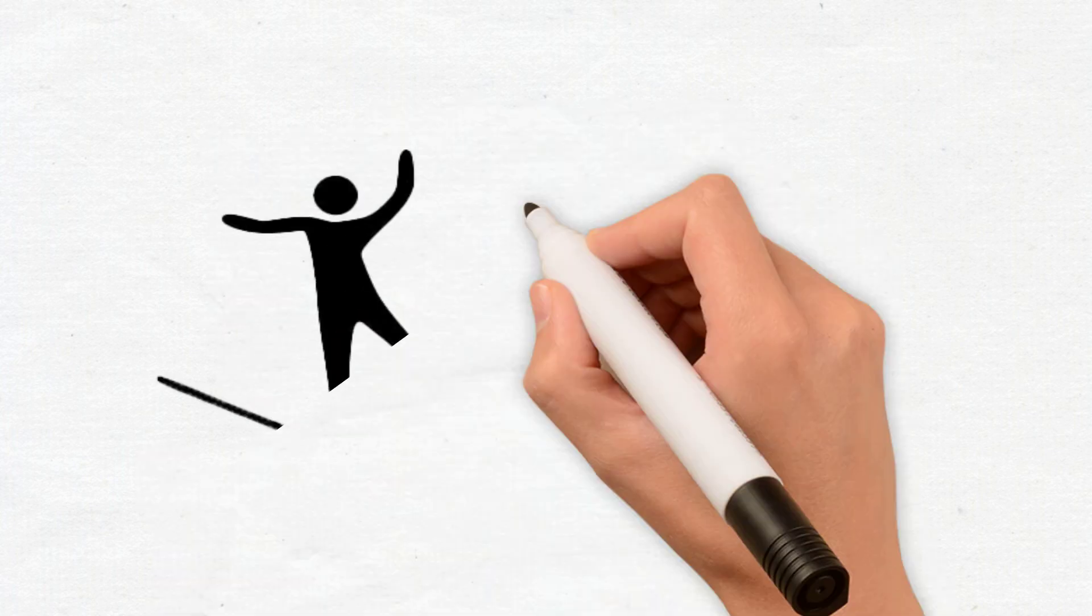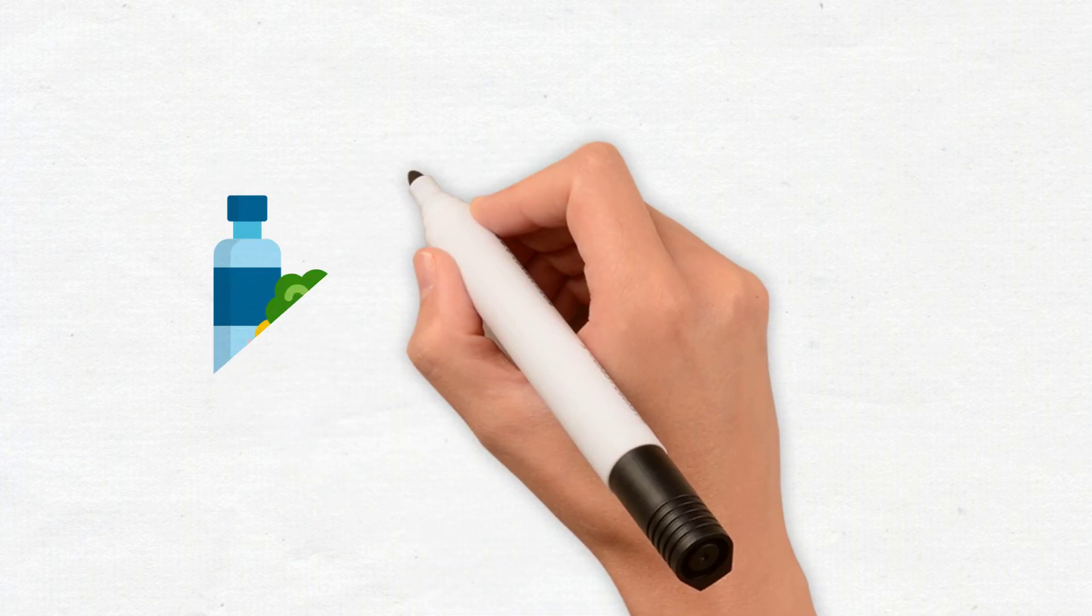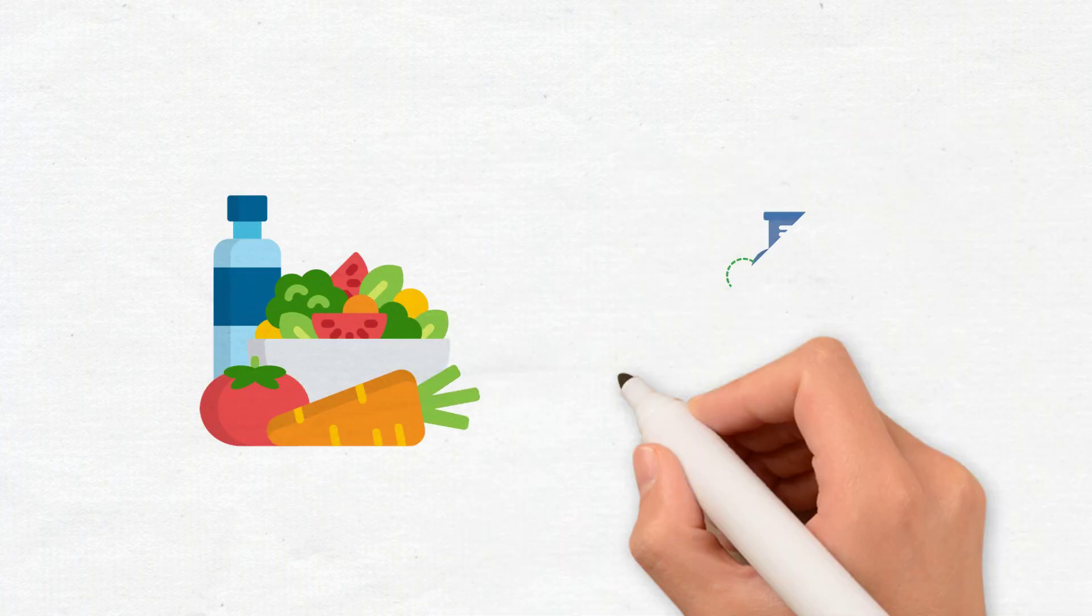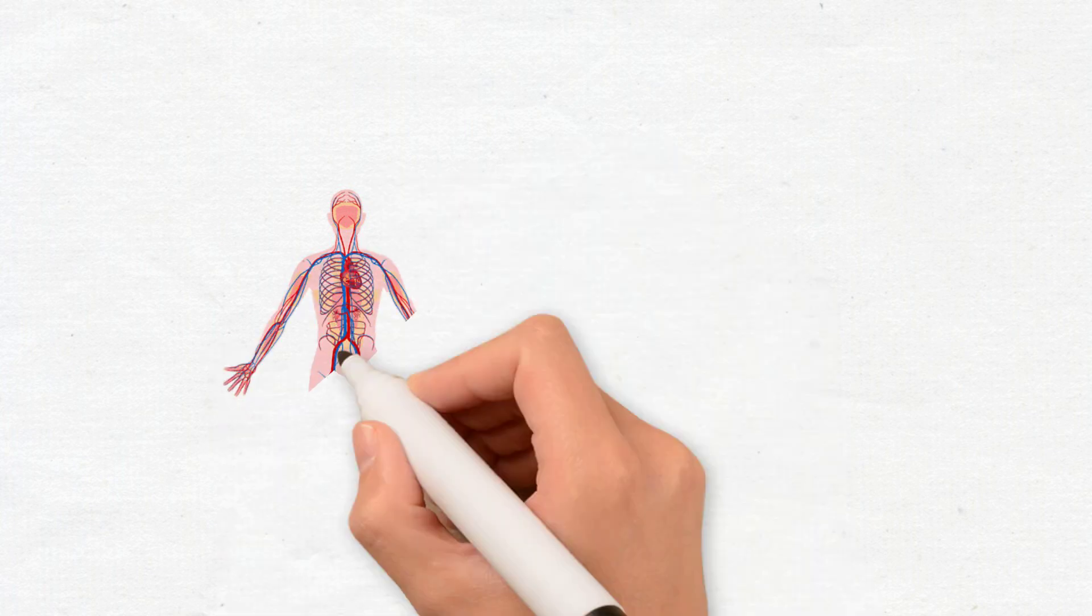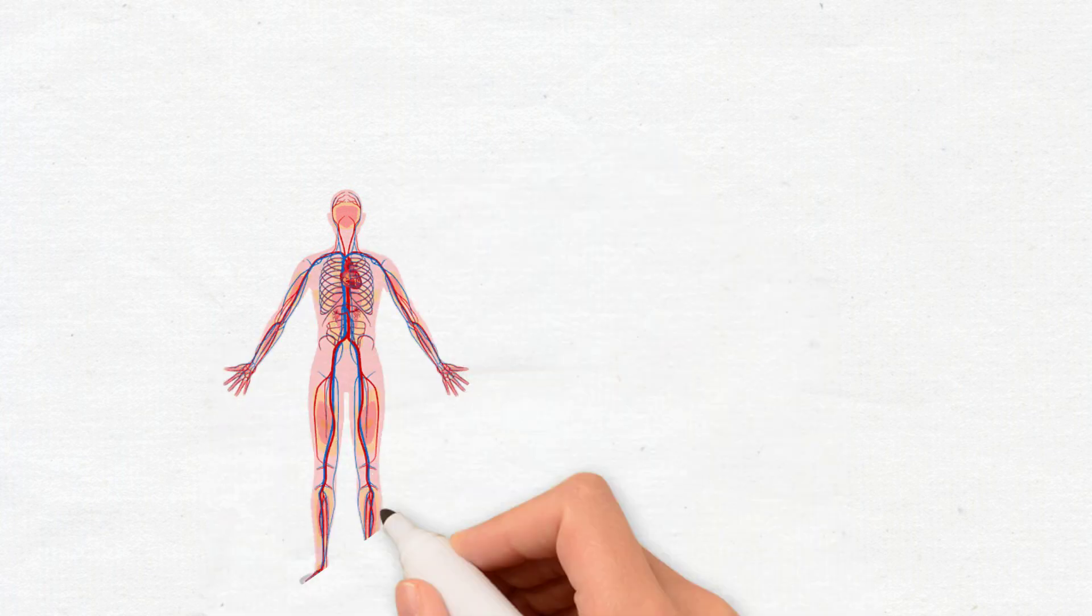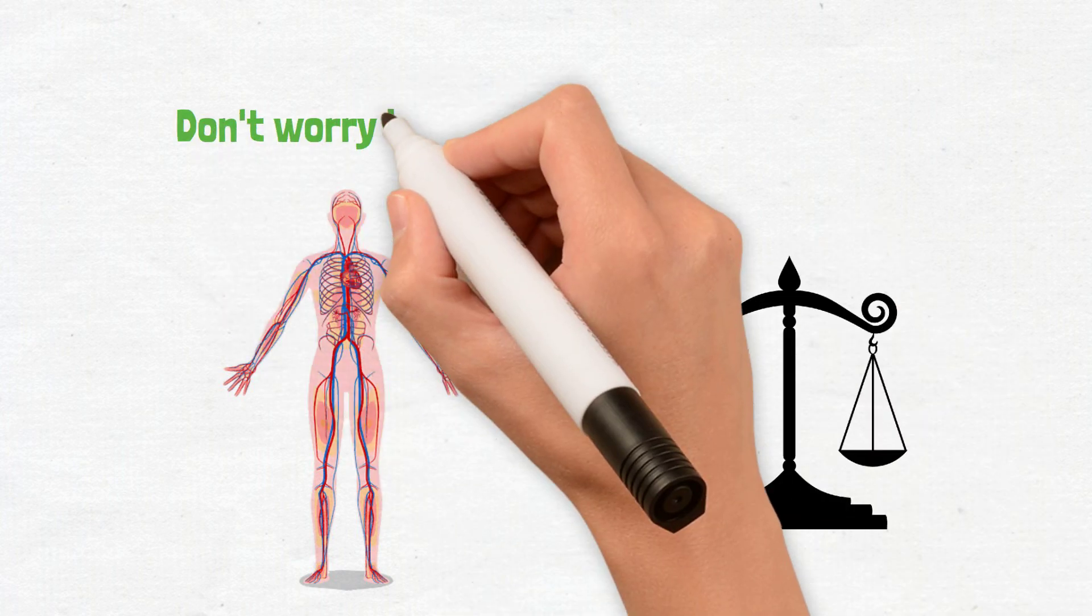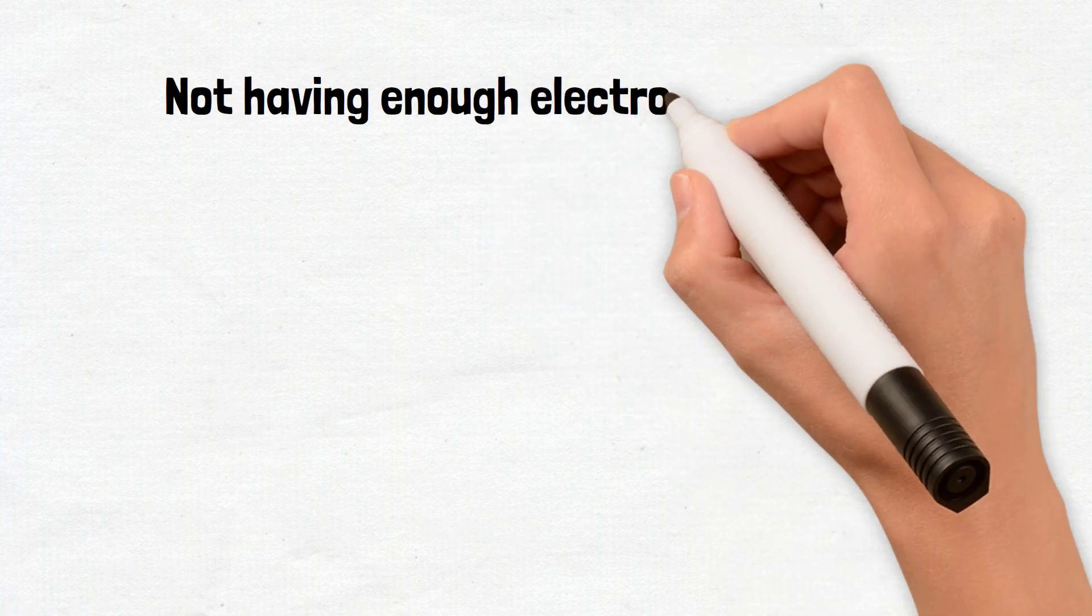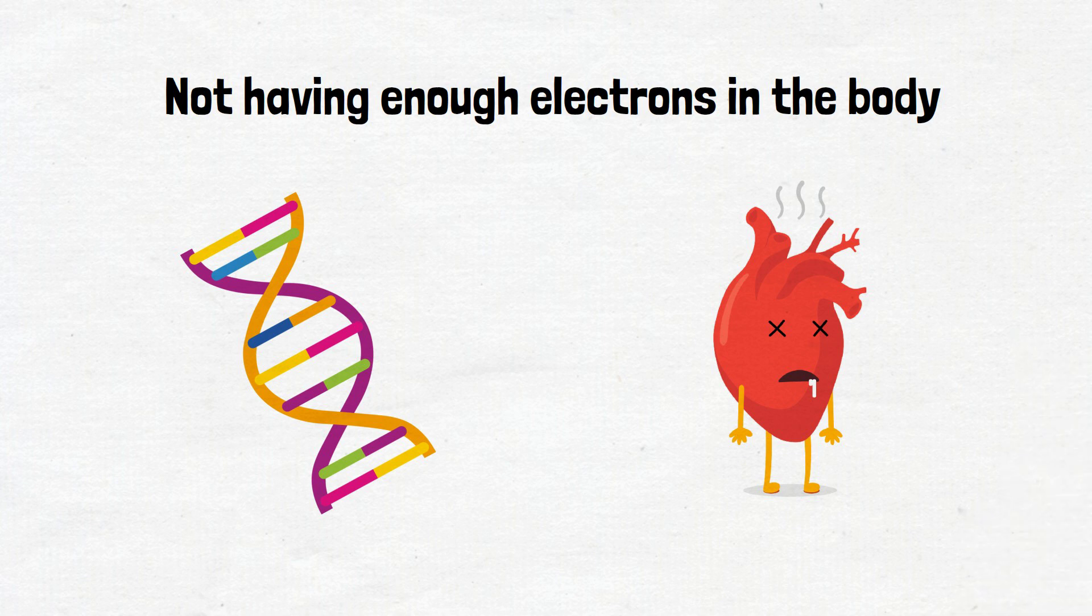Oxidative stress is an imbalance in the body caused by an electron deficiency. Maybe you've heard of antioxidants in the form of food or supplements. As their name implies, antioxidants reduce oxidative stress by donating electrons to the body so that balance can be restored. Don't worry if this sounds a little too technical. The main idea is that not having enough electrons in the body can lead to DNA damage and a wide range of health problems.